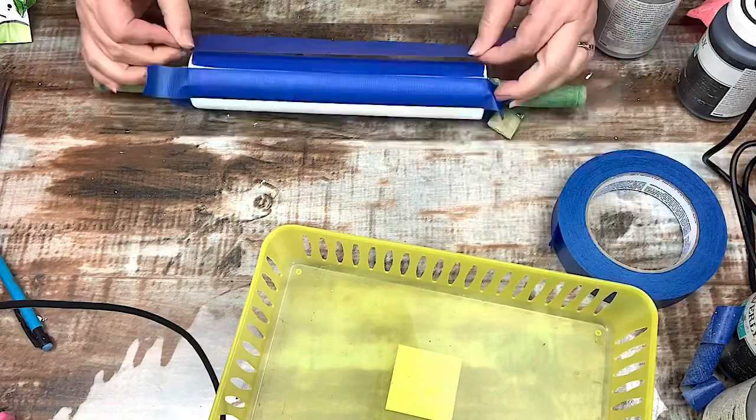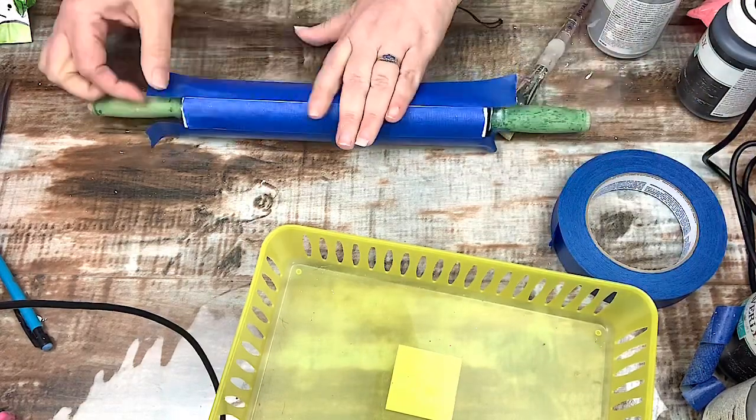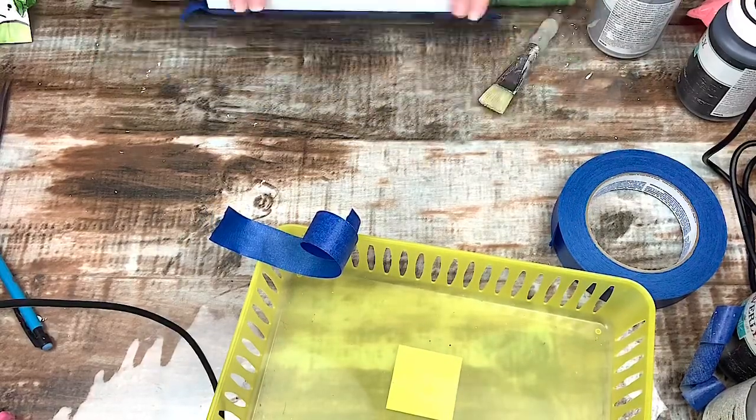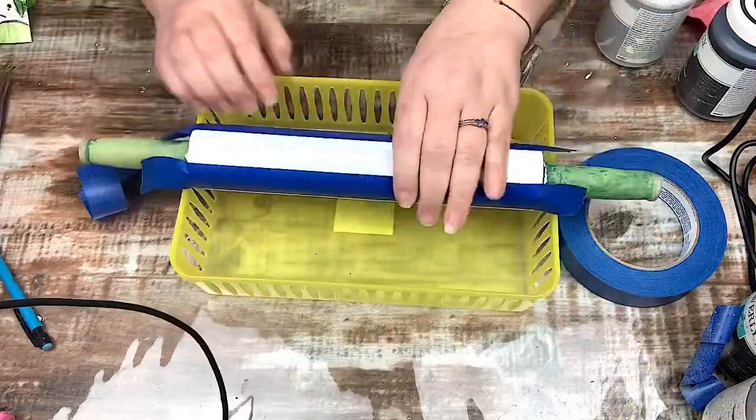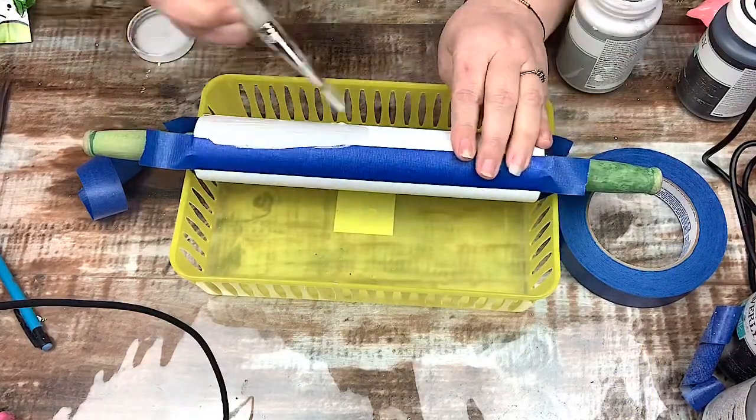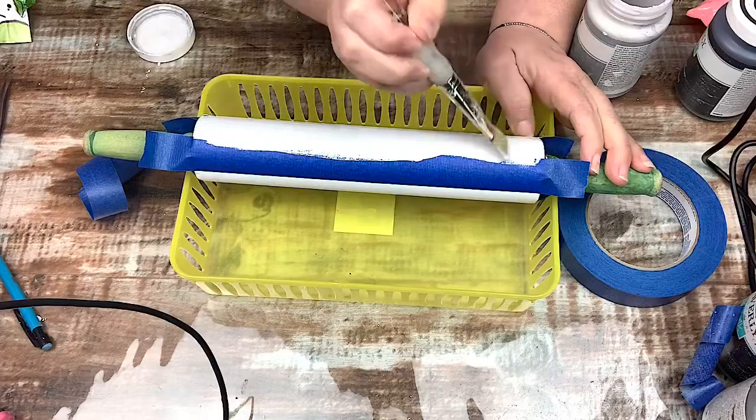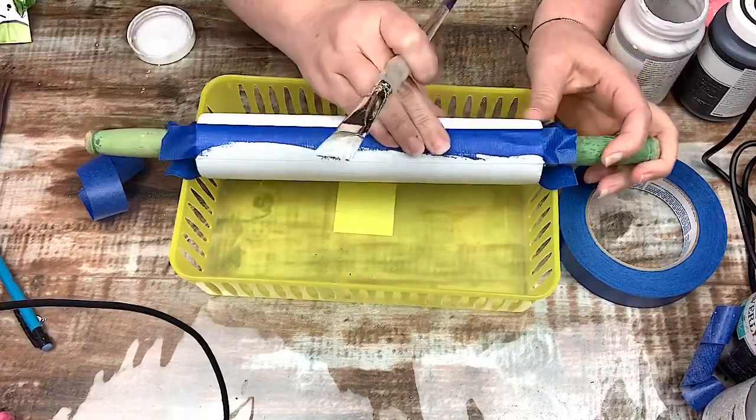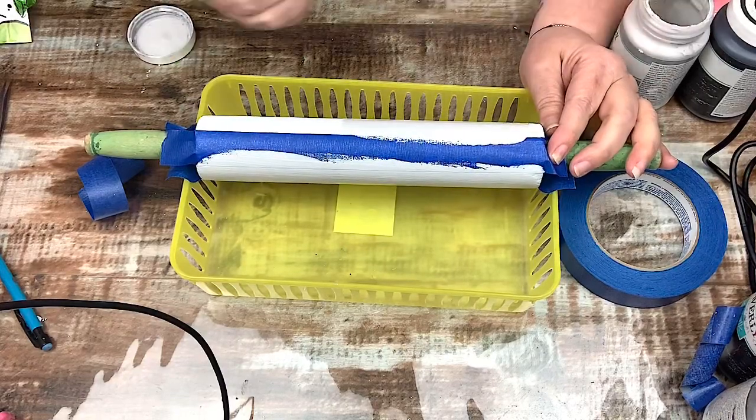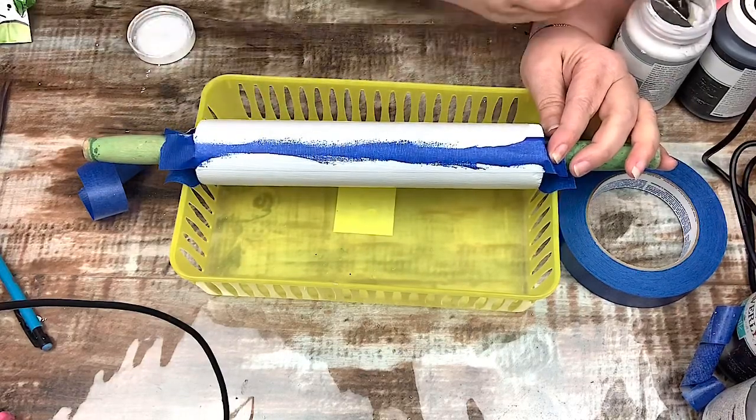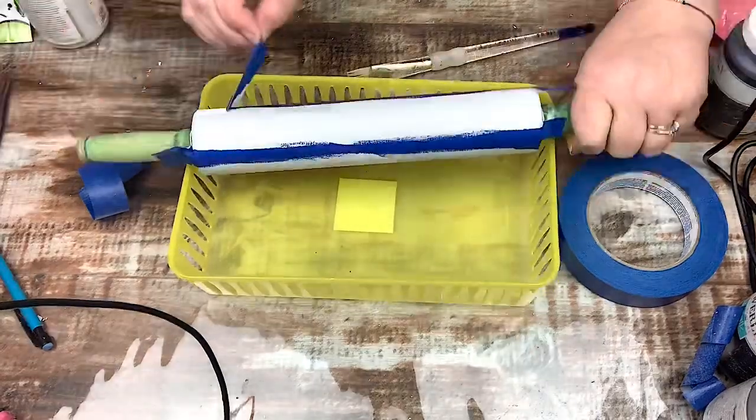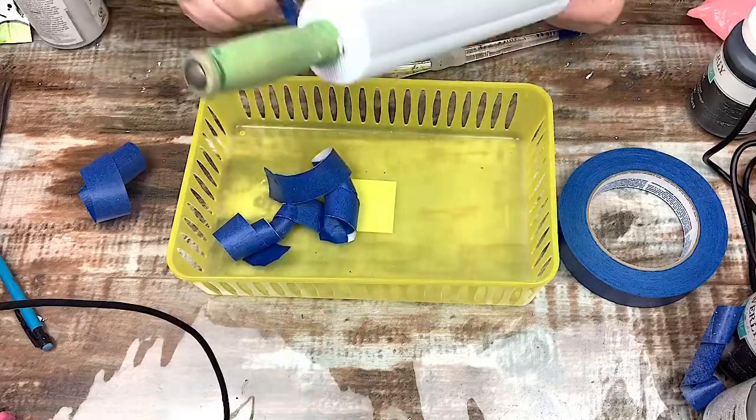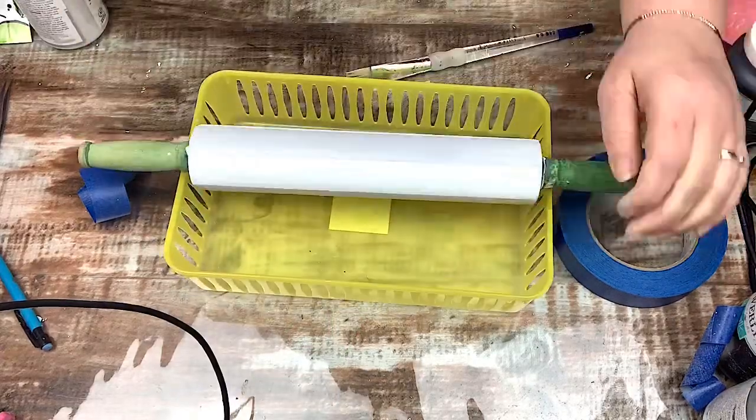And then once I get all the tape lines down, I will go in with my favorite Waverly chalk paint in silver lining and paint the lines gray. Then I will remove the tape showing my fresh lines and let that dry.